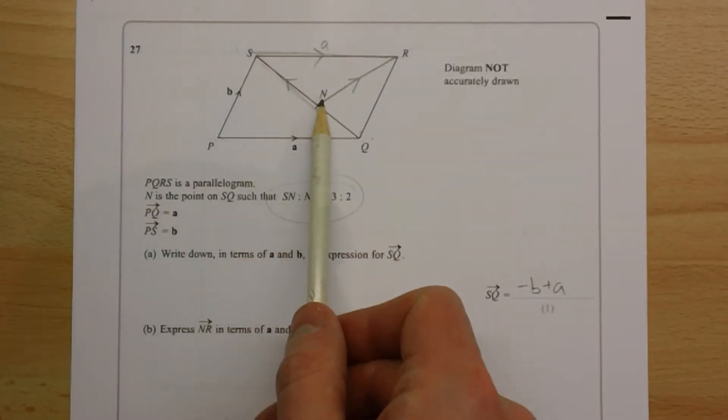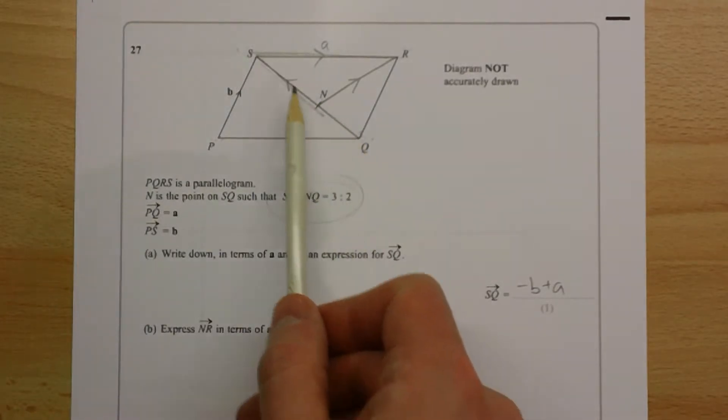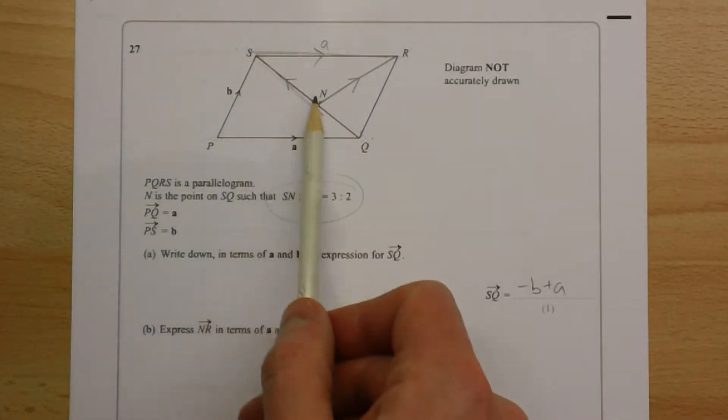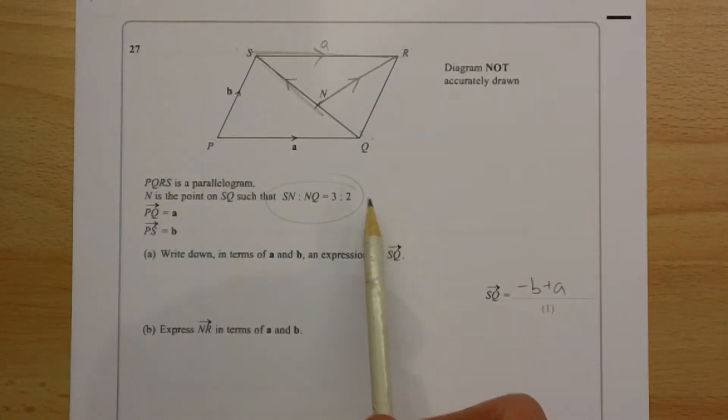Now, this is three parts, this is two parts, so the whole thing is five parts, and this is three-fifths. From S to N is three-fifths of the length from S to Q.